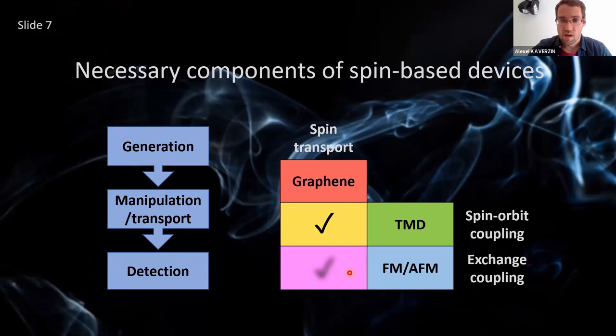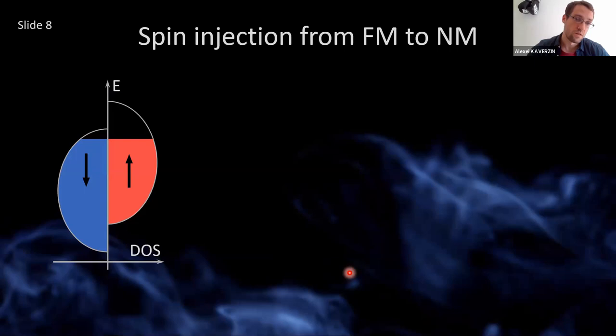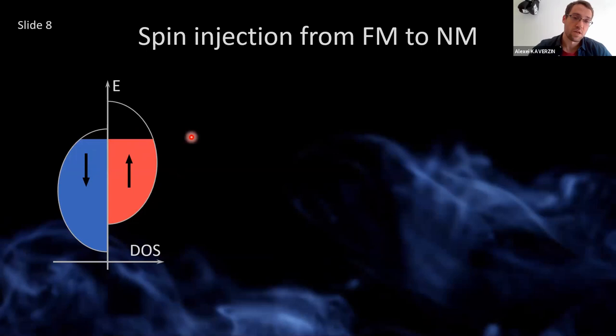In order to understand what we want to get from magnetic graphene, let me take a bit of a detour into non-layered bulk 3D materials. This is a cartoon of a band structure familiar to many of you, where the band structure of a ferromagnet is shown. You see that the electron states with spin up are shifted in energy with respect to the electron states of spin down. At the Fermi level, I'm going to have spin polarization of the number of carriers.